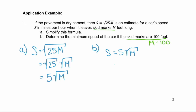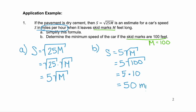The square root of 100 is 10, so 5 times 10 is 50. s is measured in miles per hour, so the answer is 50 miles per hour. So we know that the minimum speed of the car that left skid marks of 100 feet was 50 miles per hour.